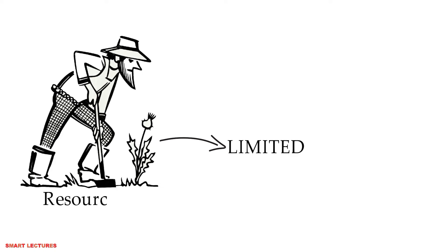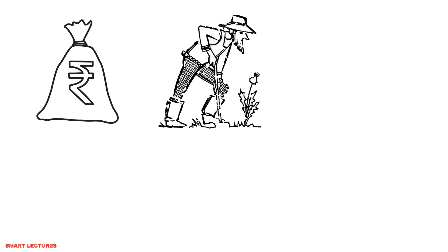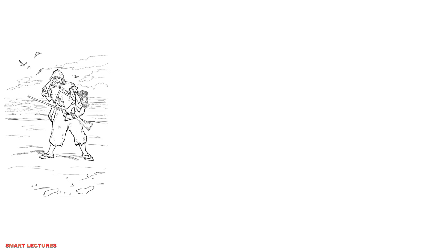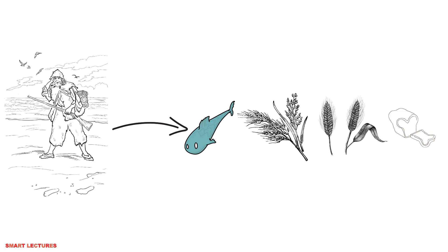When I say limited resources, it means everybody has got limited money, limited skills, limited time, limited energy, etc. Let's take the example of Robinson Crusoe. He can satisfy his hunger with fish, rice, barley, and bread.